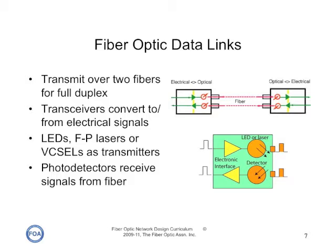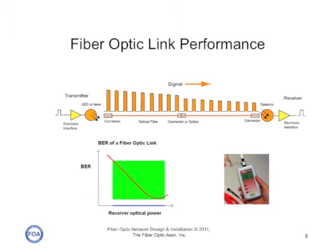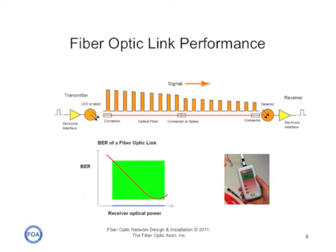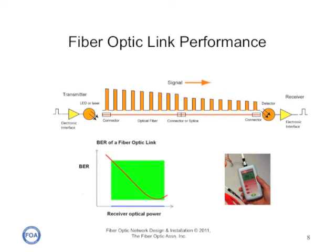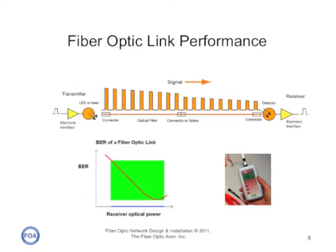The designer should understand how fiber optic data links work. With the exception of fiber to the home, which only uses one fiber, most fiber optic data links transmit over two fibers, one in each direction for full duplex transmission. Transceivers are used to convert optical to electrical signals and vice versa, using lasers or LEDs as transmitters and photodetectors to convert optical signals back to electrical signals in the receiver. As the transmitter sends a signal down an optical fiber, the signal amplitude is attenuated by the fiber and reduced by the loss of connectors or splices, so what we are interested in is the amount of receiver power we have.